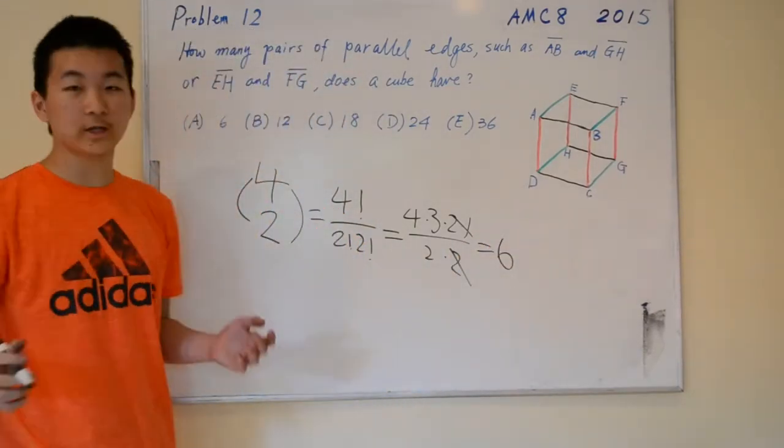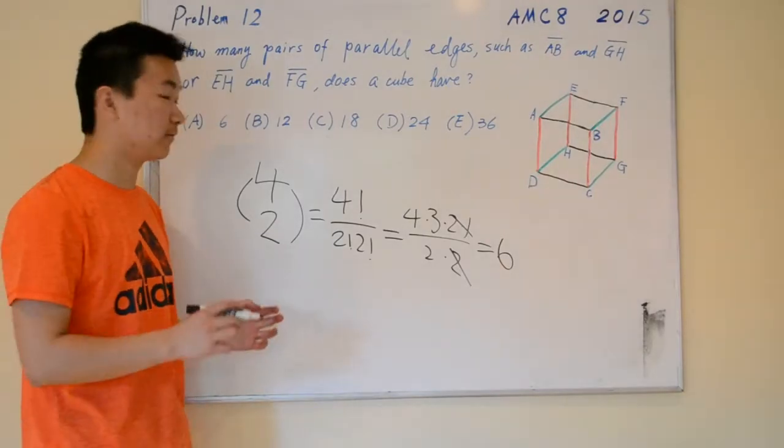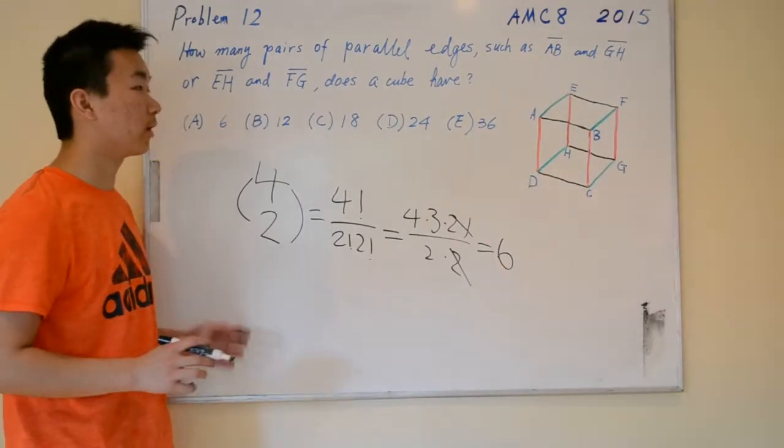Okay? So, for each direction, there is a total of six pairs that we can form.